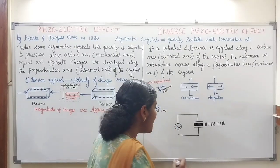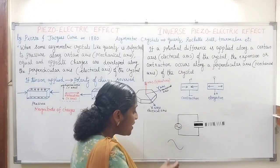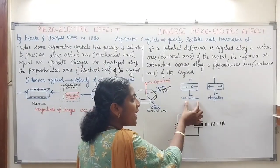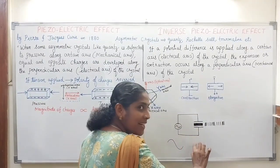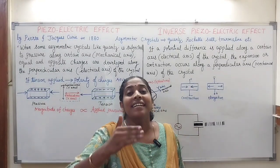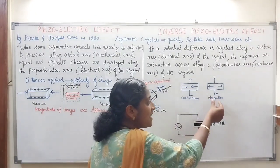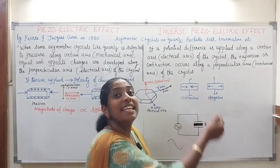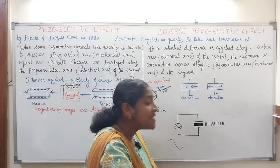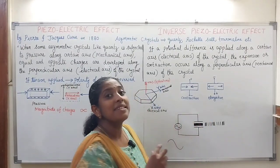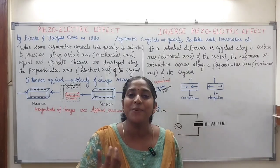In an AC voltage, the direction changes in each half cycle. In the first half cycle the crystal will contract; in the second half cycle the crystal will elongate. Then in the next half cycle it will again contract — the change in crystal length happens continuously: decreasing, increasing, decreasing, increasing, and so on. This continuous decreasing and increasing in the length of the crystal produces vibration, that is sound waves. This is the basic principle of the production of ultrasonic waves.